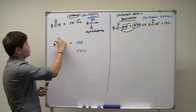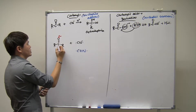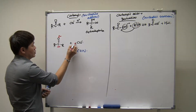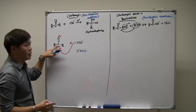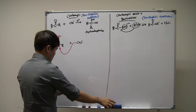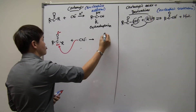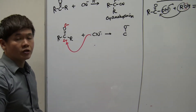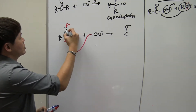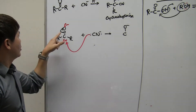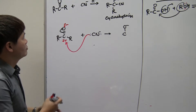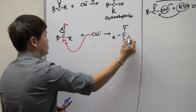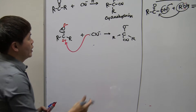Looking at the carbonyl structure, the electronegative oxygen polarizes the C=O bond, making the carbon electron-deficient. The lone pair on the cyanide carbon is attracted toward this electron-deficient carbon. A tetrahedral structure forms, but since carbon can't hold five bonds — it can't expand its octet being in period two — the pi bond breaks. The two electrons from the pi bond come to the oxygen, giving it a negative charge, while the new bond forms with the incoming cyanide.